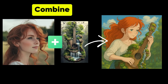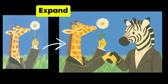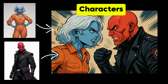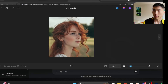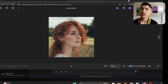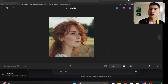Including combining different people and objects together, expanding images and making them larger. You can also add multiple different characters into the same image. So I've got this portrait of a woman here — let's see how to change it to a different art style.